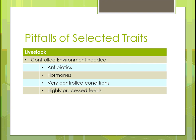Some of the pitfalls of using selected traits are that when you create animals with only the traits you want, you then need antibiotics and hormones to make them grow faster. It's a very controlled condition, and they have to have highly processed feeds in order to grow as fast as we want and stay healthy using those antibiotics and hormones.